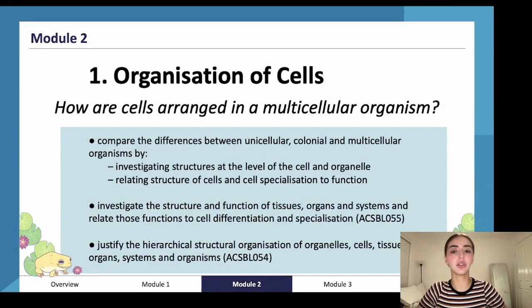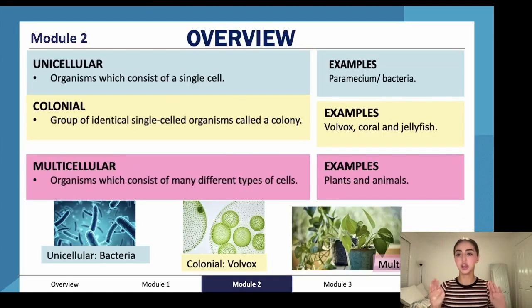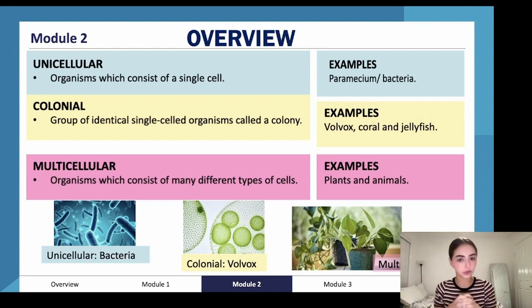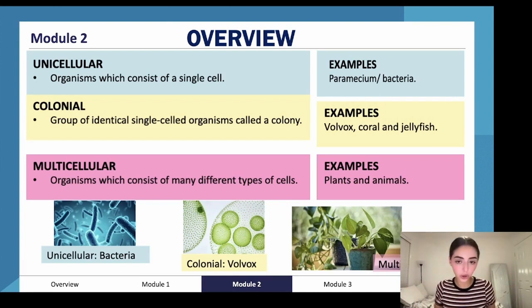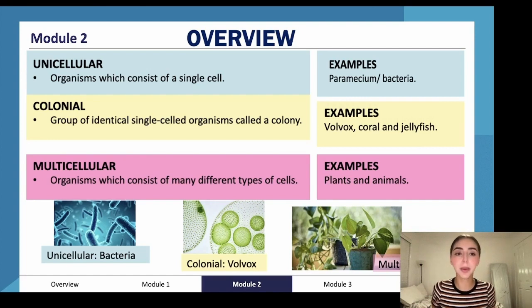Looking at the organization of cells — how are cells arranged in a multicellular organism? We have unicellular, colonial, and multicellular organisms. Unicellular means that a cell exists on its own; it doesn't need other cells and can perform all its tasks by itself. It's quite simple. Paramecium and bacteria are common examples.